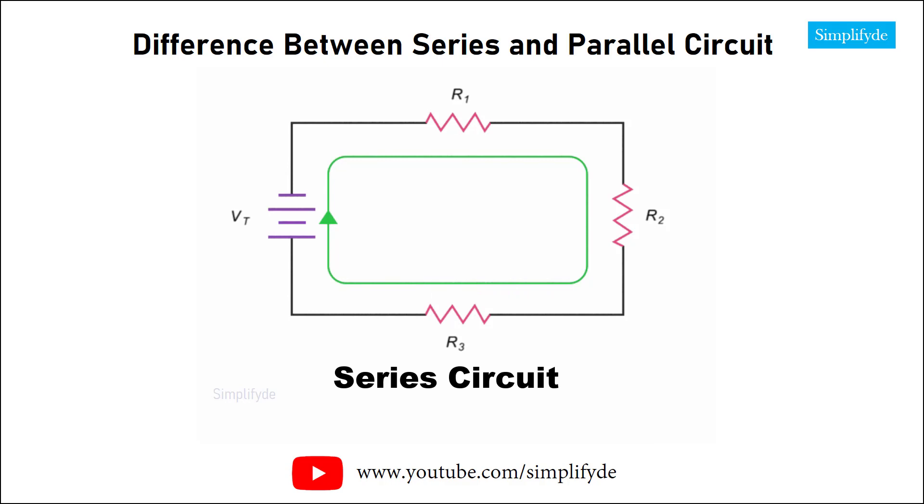For instance, if the source current in a series circuit is 5 amps, then no matter where along the circuit you take an ammeter reading, it will also register 5 amps.